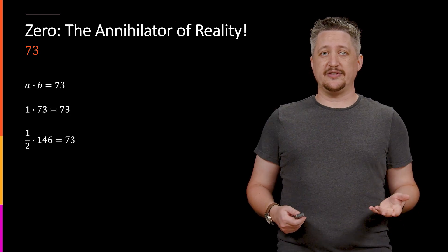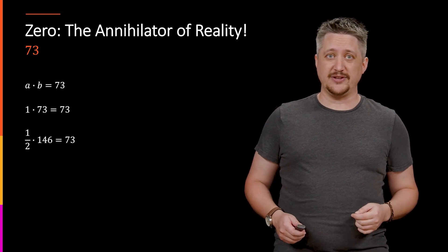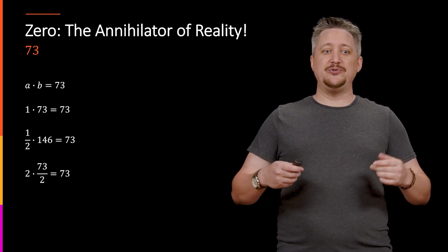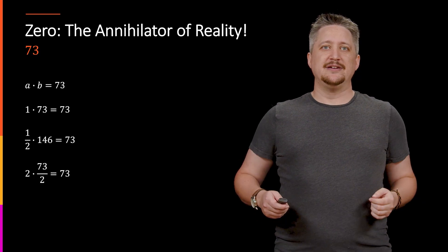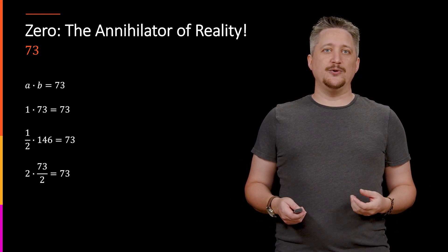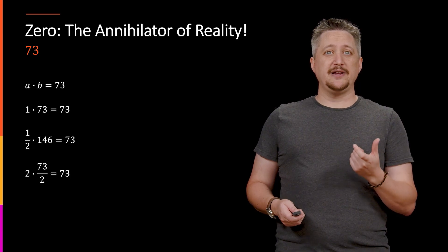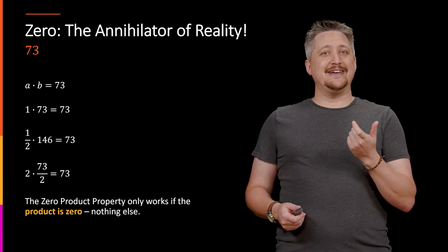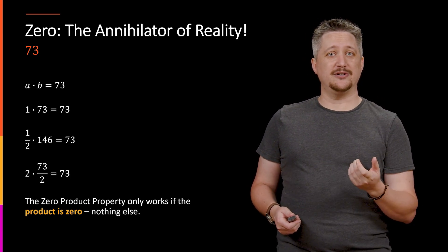So we could just as easily have, say, 1 half and 146, or 2 times 73 over 2. These both give us 73 when we multiply them together. So the 0 product property, there's something very special about this in that the product has to be 0.